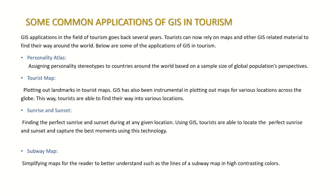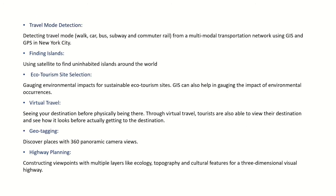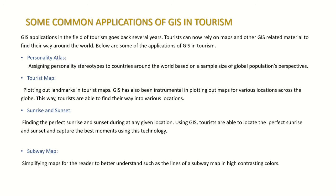The applications of GIS in tourism go back several years. Tourists can now rely on maps and other GIS-related material to find their way around the world. Common applications include: personality atlas, tourist map, sunrise and sunset, subway mapping, travel mode detection, finding islands, ecotourism site selection, virtual travel, geotagging, and highway planning.